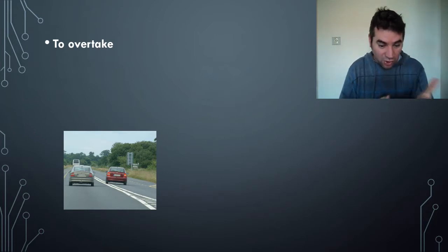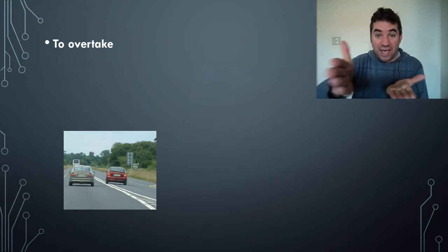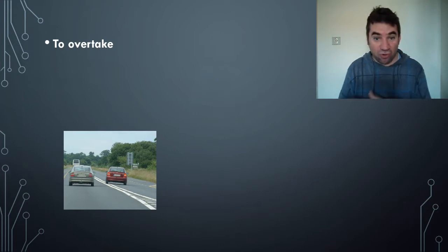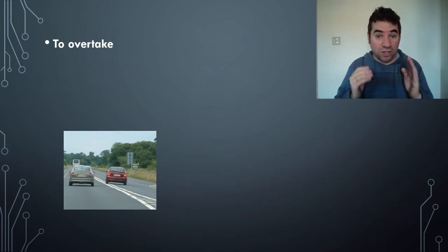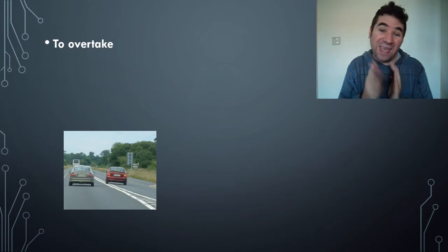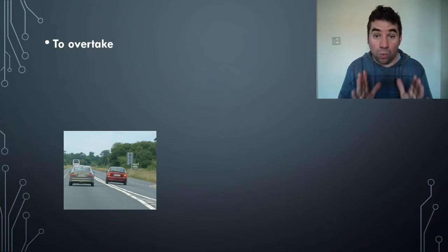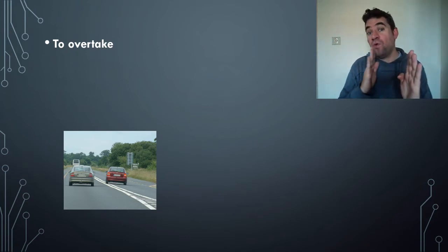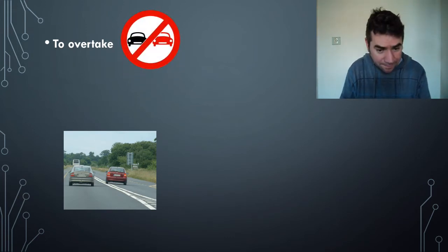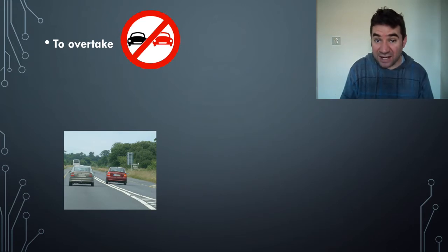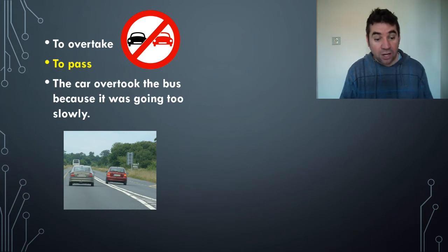If you're in Europe and drive on the other side, it gets pretty confusing. Going past — same thing. In a race, if someone's running, you're trying to overtake them to win. One company might try to overtake another — become more successful. You might also see a no-overtaking sign. Example: The car overtook the bus because it was going too slowly.